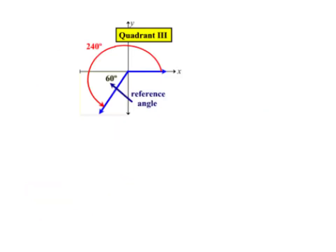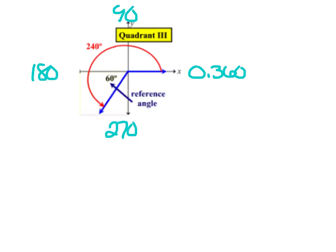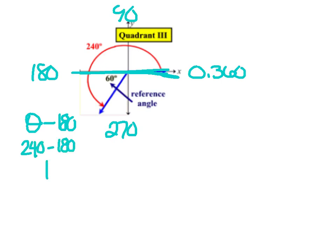My third example is in quadrant three. Make a new sketch, pause it, and then compare with me. This time my angle is sitting in quadrant three. How far are you from the x-axis? I went a positive 240, but I'm only 60 degrees from the x-axis. I took my theta and subtracted 180 degrees: 240 minus 180 gives me a reference angle of 60 degrees. Remember — degrees of separation with the x-axis.